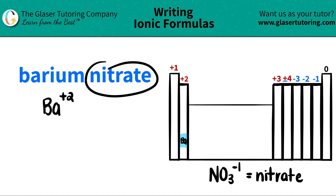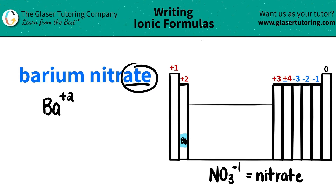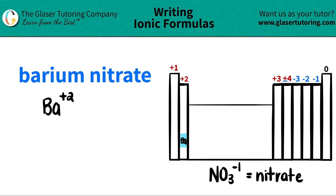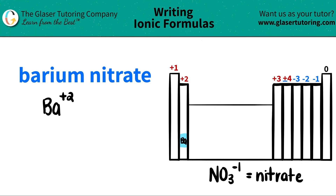The next component of this compound is nitrate. I see that it has an -ATE ending, and all -ATE endings are always polyatomic ions, but polyatomic ions are never on the periodic table — they have to be memorized. So for this video, I just wrote down what nitrate actually looks like. Nitrate is NO₃ with a negative 1 charge.